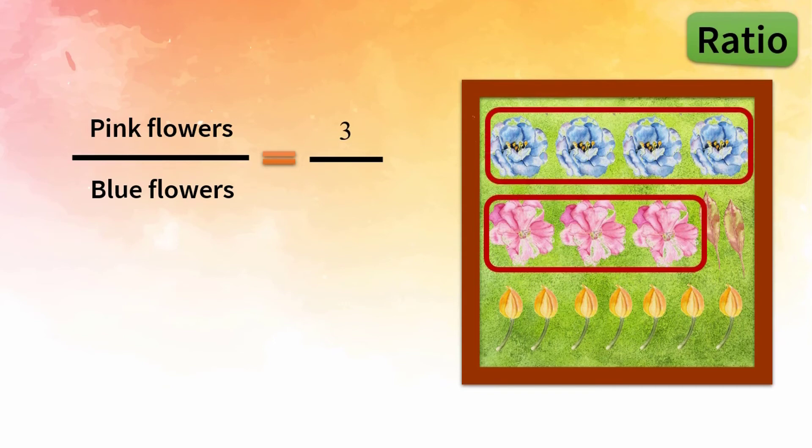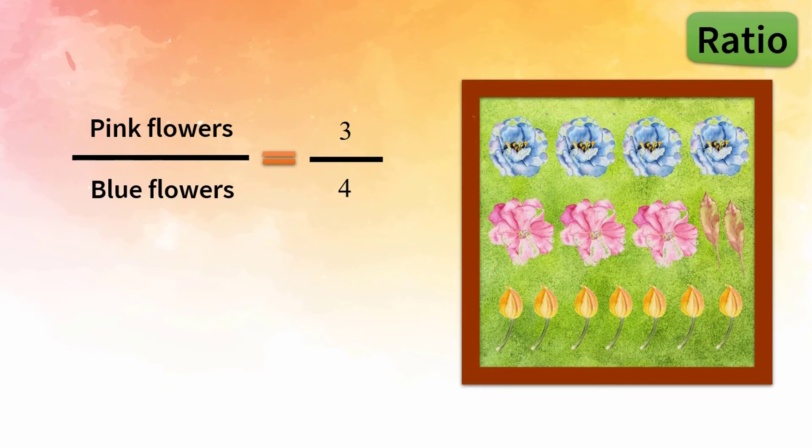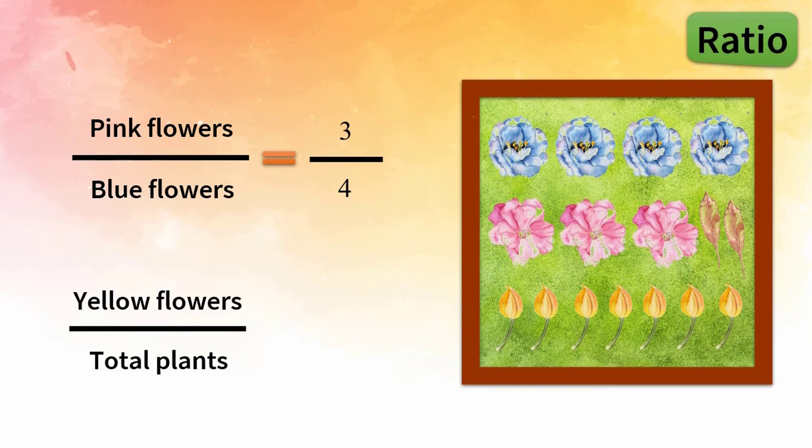In another example, we can find out the ratio of yellow flowers to total plants. We start by counting the number of yellow flowers, which is 7, and write 7 up in front of the yellow flowers.